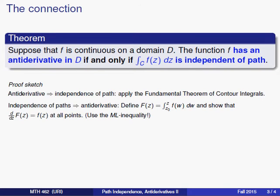Alright, now to sketch a proof of why this is true, why you get an anti-derivative exactly when you have the independence of path property, we'll take a look at both directions.